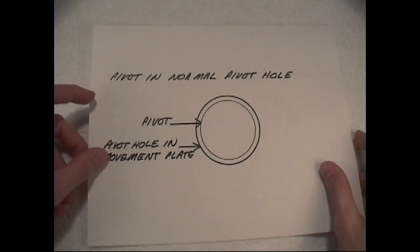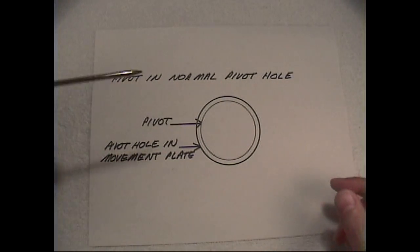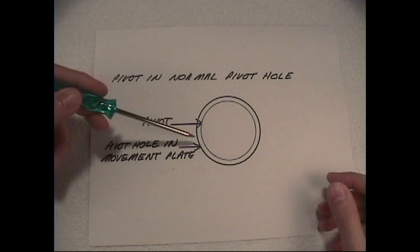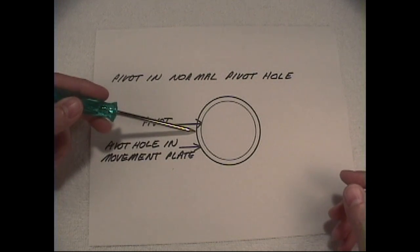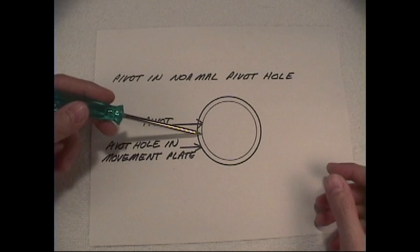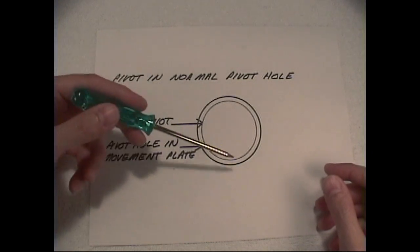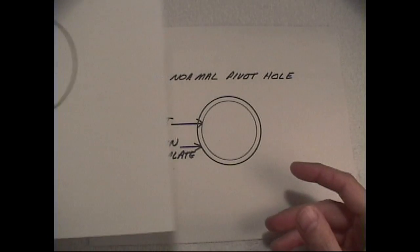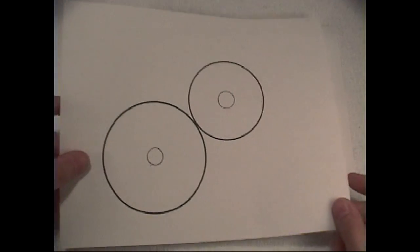First of all, we have the pivot in a normal pivot hole. This being the pivot inside, the pivot hole on the outside. Typically I've read and heard that the optimal distance is two thousandths of an inch in between the pivot hole and the movement plate.